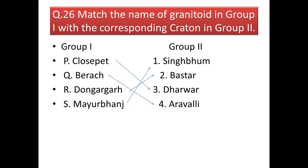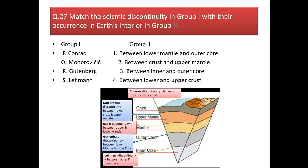Next question: match the name of the granitoid in group 1 with the corresponding craton in group 2. Closepet granite is of the Dharwar Supergroup which separates the eastern and western Dharwar craton. Our answer will be option B. From the figure, Conrad discontinuity is between upper and lower crust, Mohorovičić discontinuity is between crust and upper mantle, Gutenberg discontinuity is between lower mantle and outer core, and Lehmann discontinuity is between outer core and inner core.